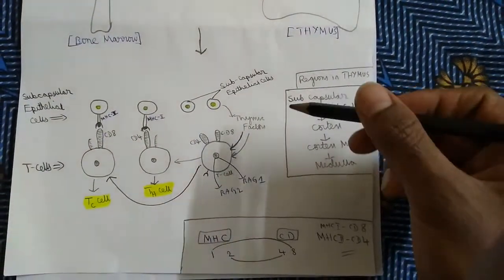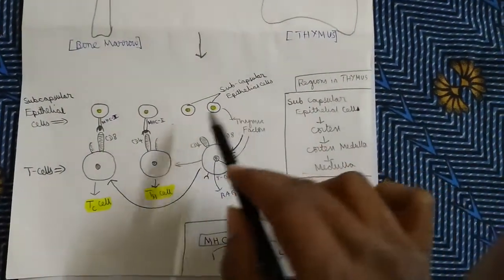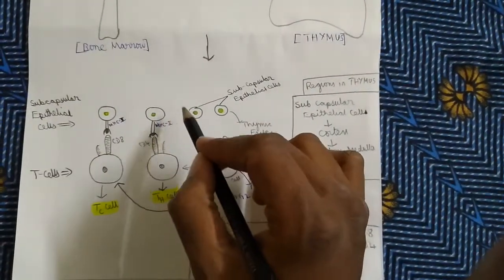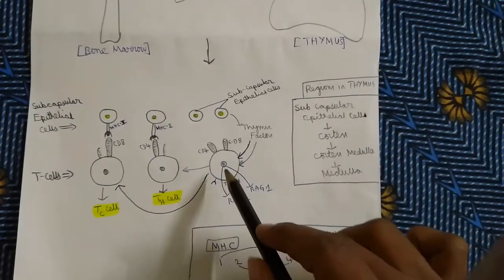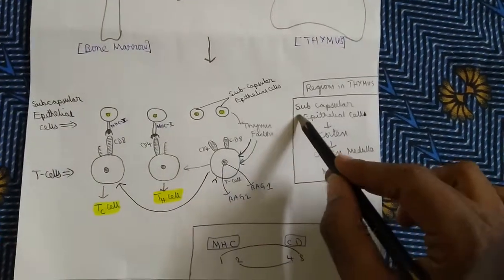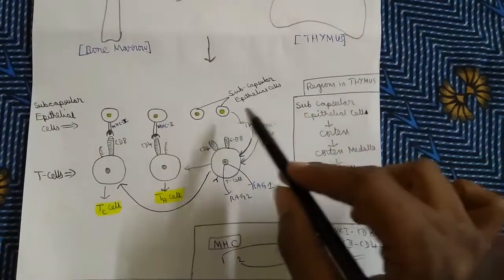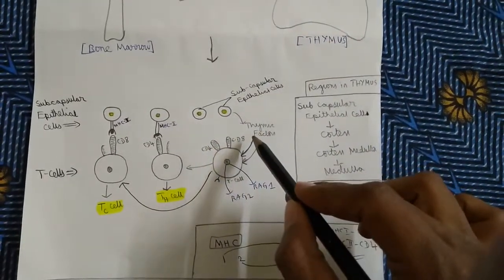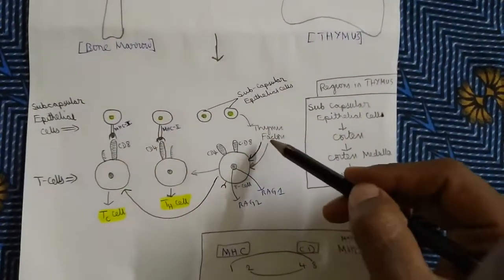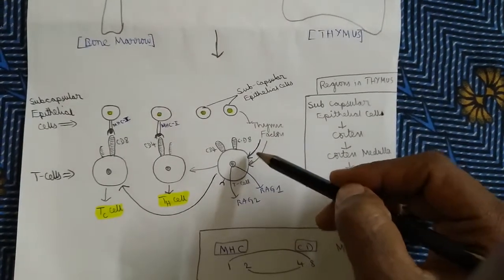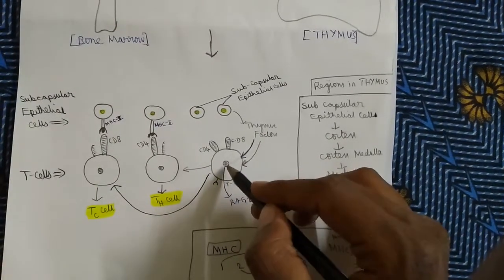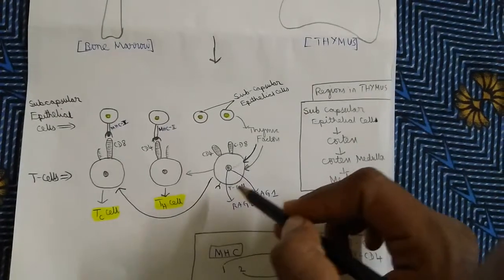Let us go through the process of maturation. In the subcapsular epithelial cell region, there are many epithelial cells present. When the T-cell drawn from the bone marrow reaches this subcapsular epithelial region, these cells sense thymic factors like thymocin, thymotaxin, and thymic factors. These thymic factors release some signals into the T-cells, and those signals penetrate into the T-cell nucleus.